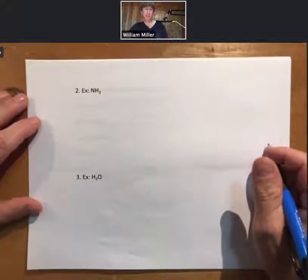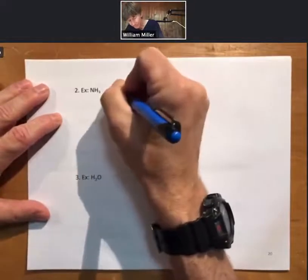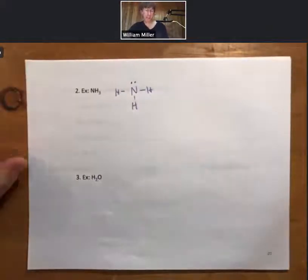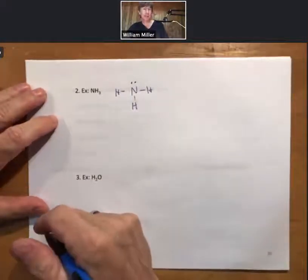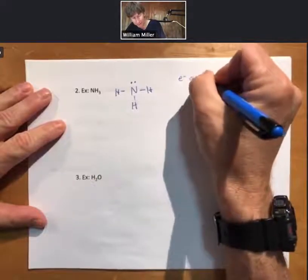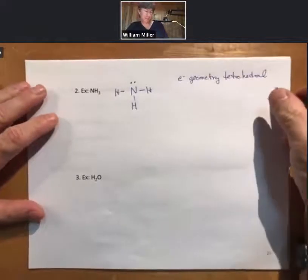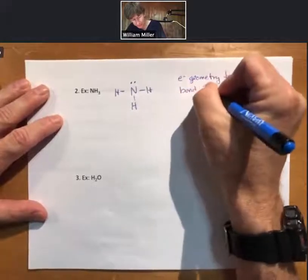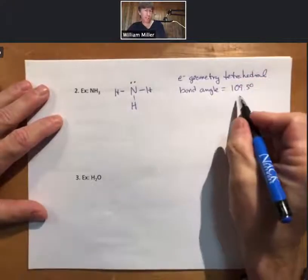Two more key examples of tetrahedral electron geometries: NH3, ammonia. If we draw the Lewis structure for ammonia, it has one, two, three, four electron groups. Remember, a lone pair of electrons counts as an electron group. That means the electron geometry is tetrahedral, the hybridization is sp3, and the bond angles are 109.5 degrees — although we'll say something about that in a minute.